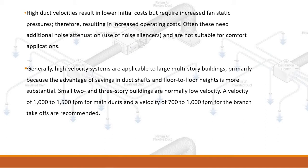High velocity systems often need additional noise attenuation using noise silencers and are not suitable for comfort applications. They are generally applicable to large multi-story buildings, primarily because savings in duct shafts and floor-to-floor heights are more substantial. Small two and three-story buildings are normally low velocity. A velocity of 1000 to 1500 FPM for main ducts and 700 to 1000 FPM for branch take-offs are recommended.